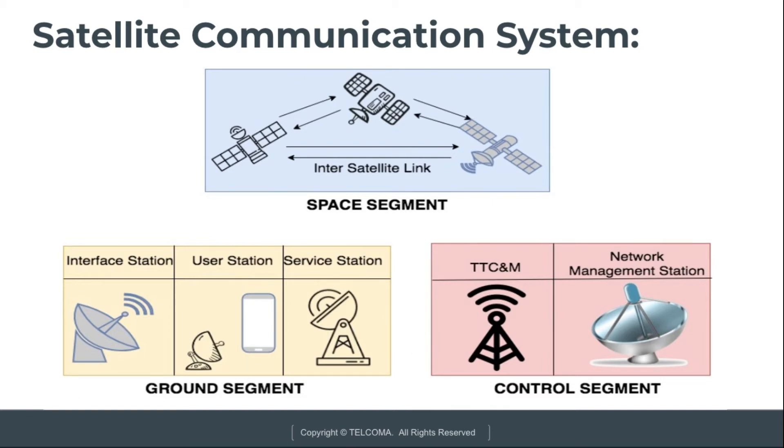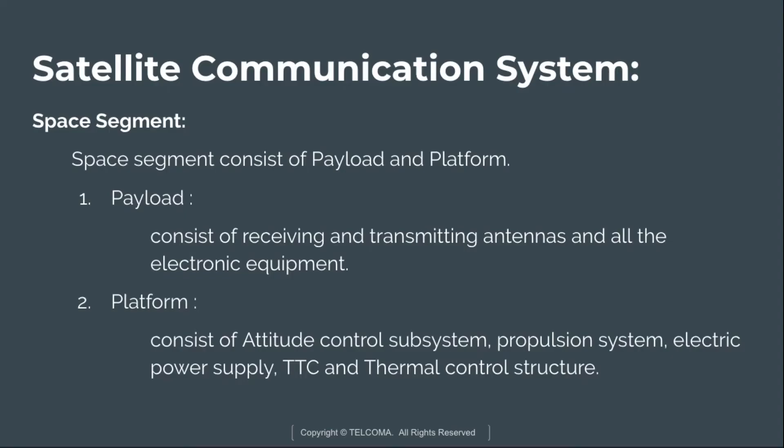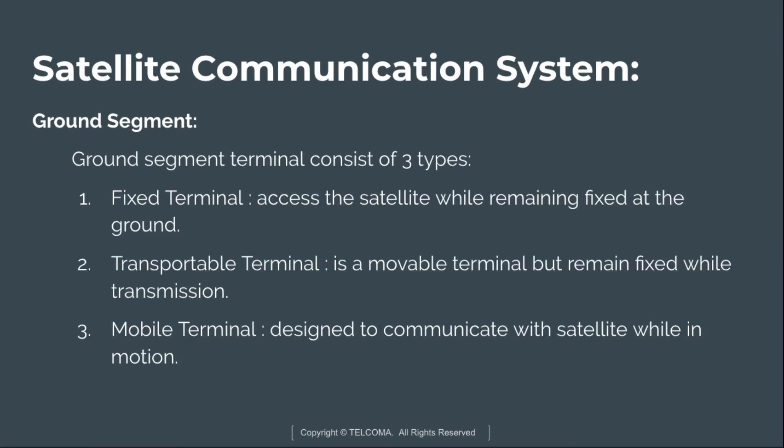The space segment consists of a payload and a platform. The payload consists of receiving and transmitting antennas and all the electronic equipment. The platform consists of the attitude control subsystem, propulsion system, electric power supply, TTC, thermal control, and structure.